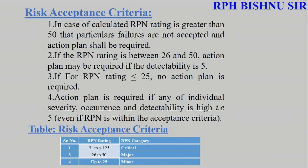The risk acceptance criteria are defined as follows: an RPN of 51 to 125 is critical; 26 to 50 is major; up to 25 is minor. This is the risk calculation framework — you can use different numerical values as needed, you are not required to use the same values shown here.